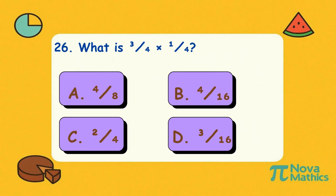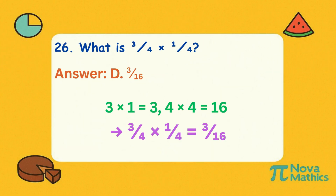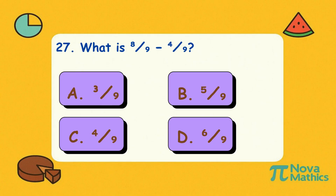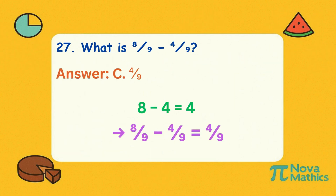Twenty-six. What is three-quarters times one-quarter? Three times one is three. Four times four is sixteen. That's three-over-sixteen. Twenty-seven. What is eight-ninths minus four-ninths? Eight minus four is four. Keep the bottom the same. Four-ninths.